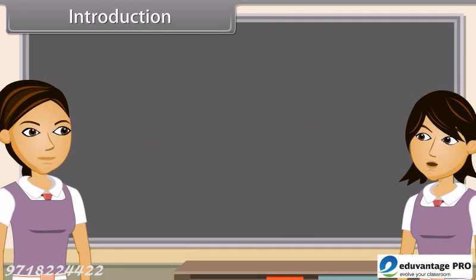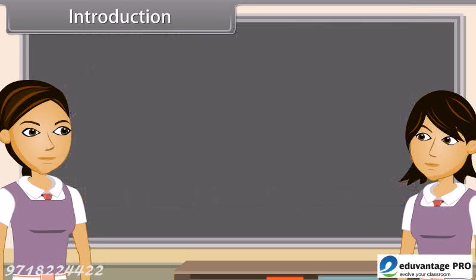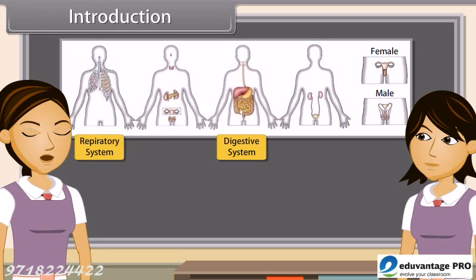As we already know, the body of higher animals like man is formed of a number of organ systems. Some of the examples are digestive system, respiratory system, circulatory system, excretory system, etc.